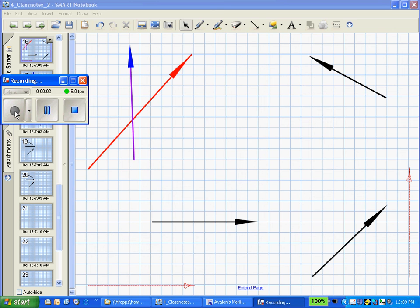Let's take a look at how we can add vectors together. We have three black vectors.